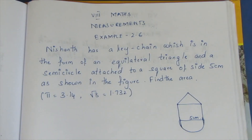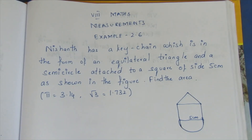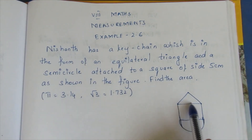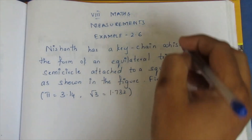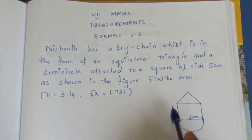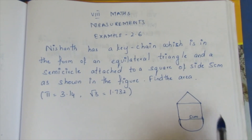Hello viewers, I am Aikli. In 8th standard, Measurement Example 2.6, we will see this problem in this video. The question is: Nishanth has a keychain which is in the form of an equilateral triangle and a semicircle attached to a square of 5 cm.